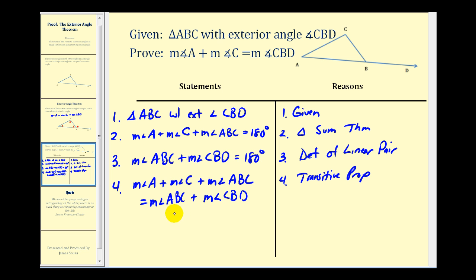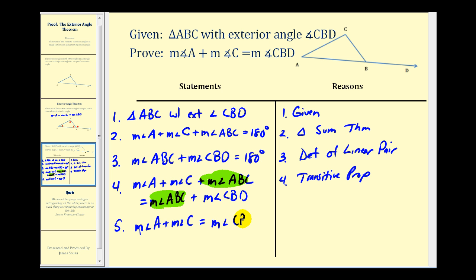Now if we take a look at this equation, if we were to subtract the measure of angle ABC from both sides of the equation, we would have what we're trying to prove: the measure of angle A plus the measure of angle C is equal to the measure of angle CBD. We subtracted the measure of angle ABC from both sides, so our reason is the subtraction property of equality.